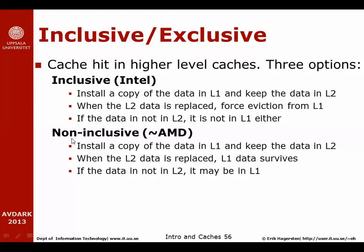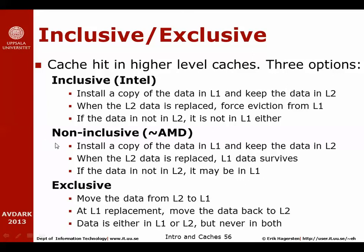Non-inclusive caches — used by AMD — have a slightly different implementation. When you miss in L1 and hit in L2, you install a copy in L1 and also keep the data in L2. However, when data is replaced from L2, the data in L1 survives. So the invariant of inclusive caches doesn't hold — if data is not in L2, it may still be in L1. In exclusive caches, when you miss in L1 and hit in L2, you move the data from L2 to L1 — it no longer resides in L2. At L1 replacement, you move it back to L2. The invariant: data is either in L1 or L2, but never in both.